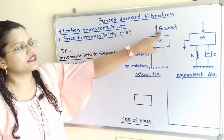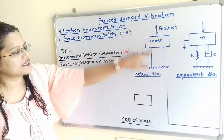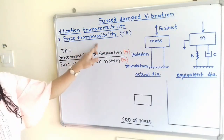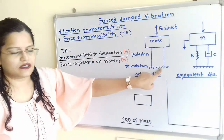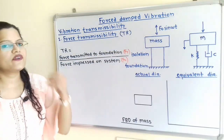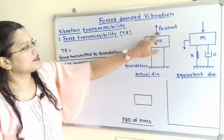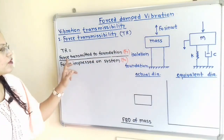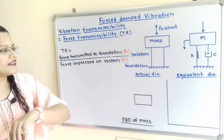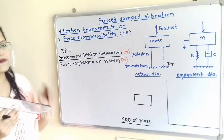If we observe this system, here is the harmonic excitation force F₀ sin(ωt) applied. Because of this harmonic force, vibrations are created in the system. Force transmissibility TR is equal to force transmitted to foundation divided by force impressed on the system. The force impressed on the system is F₀, and the force transmitted to foundation is known as FT. So the ratio FT by F₀ is known as force transmissibility TR.